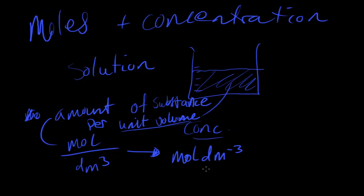Basically, if we have the moles and the volume, we just divide the number of moles by the volume. The volume should be in decimeters cubed — if it's in centimeters cubed, you'd need to convert it to decimeters cubed to get a correct value for the concentration in moles per dm³. I'll show you the two formulas used: one where the volume is in centimeters cubed, and one where the volume is in decimeters cubed.